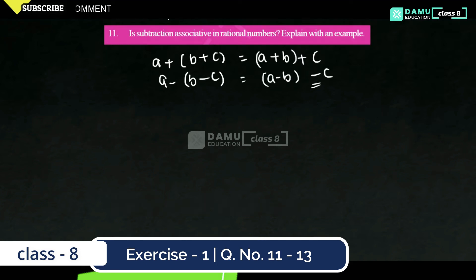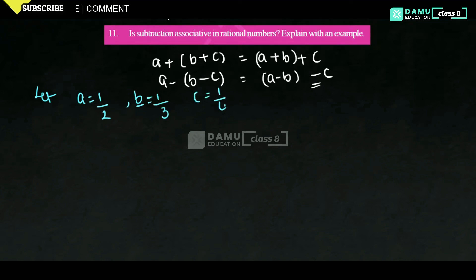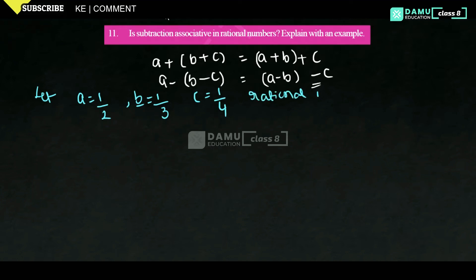So let's take: A equals 1/2, B equals 1/3, and C equals 1/4. These are the values — rational numbers.